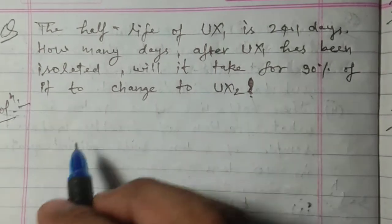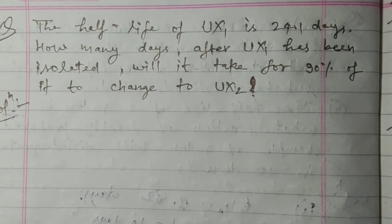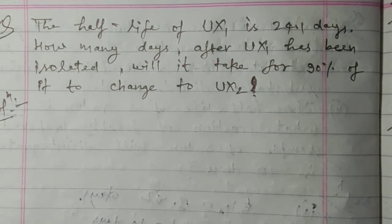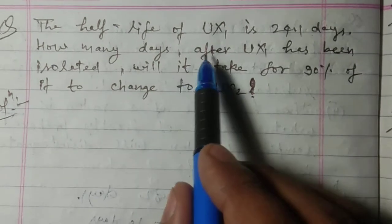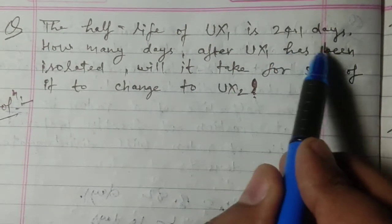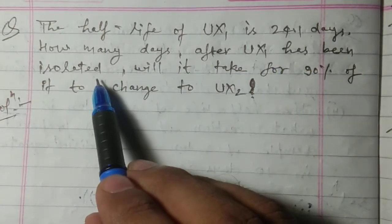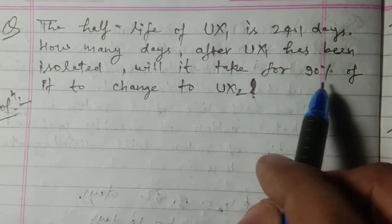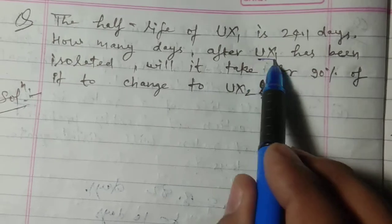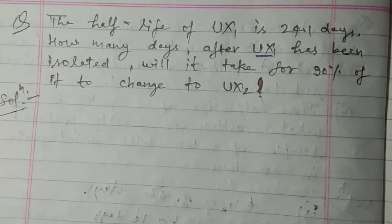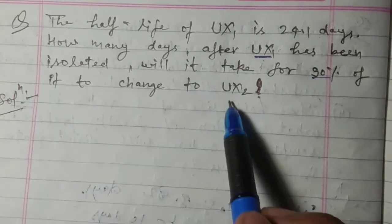Hello everyone, welcome to my channel Learning Institute. Today I am going to discuss some problems on radioactivity. Let's start with the first question: the half-life of UX1 is 24.1 days. How many days after UX1 has been isolated will it take for 90% of it to change to UX2?